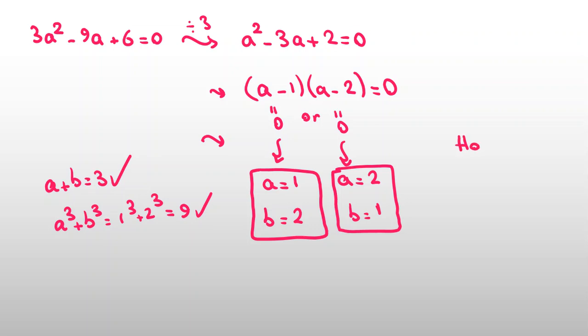I will write the homework for you. Solve a plus b equals 1 and a to the fourth plus b to the fourth equals 4. Solve this and comment your answers right below this video.